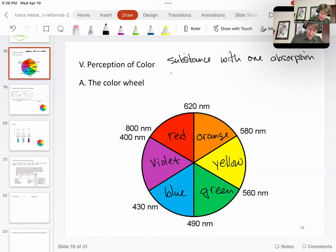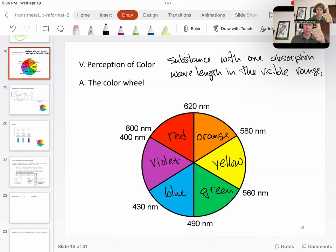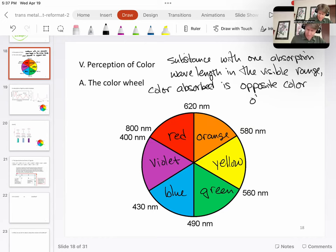one absorption wavelength in the visible range, the color absorbed is opposite on the color wheel to the color observed or transmitted. So color absorbed is opposite color observed or color transmitted. And observed and transmitted are two ways of saying the same thing.